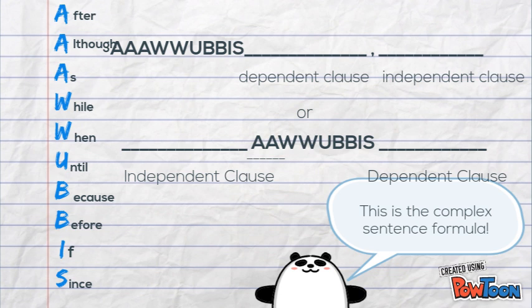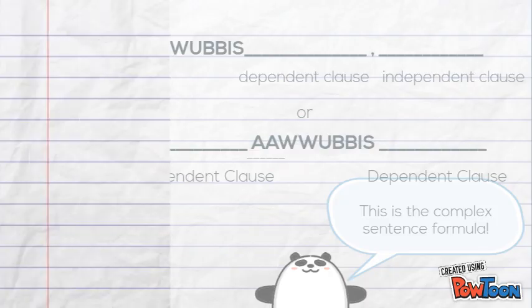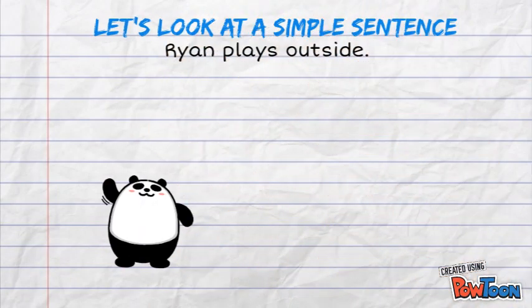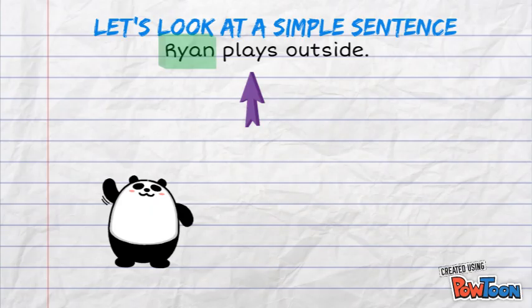Let's look at the simple sentence: 'Ryan plays outside.' It has a subject and a predicate. Ryan is the subject, and the predicate starts with the verb 'plays,' so the predicate is 'plays outside.' Now let's turn this into a complex sentence.